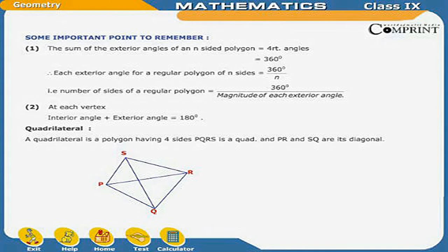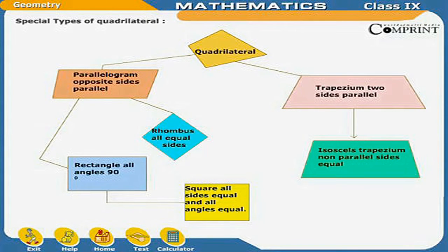A quadrilateral is a polygon having 4 sides. PQRS is a quadrilateral and PR and SQ are its diagonals. Types of quadrilateral: Parallelogram — opposite sides are parallel. Rhombus — all sides equal. Rectangle — all angles 90 degrees. Square — all sides equal and all angles equal. Trapezium — two sides parallel. Isosceles trapezium — non-parallel sides equal.